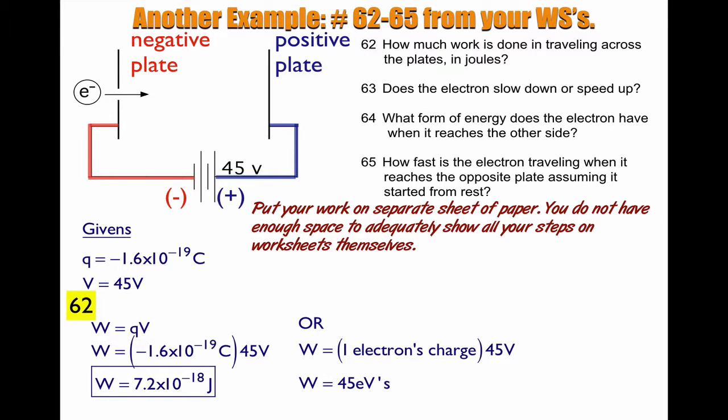Now I can also figure this out in electron volts, because work is equal to an electron's charge, how many electron charges you have. That's 1 times 45. That's the potential you're crossing. So 1 times 45 is 45 eVs.